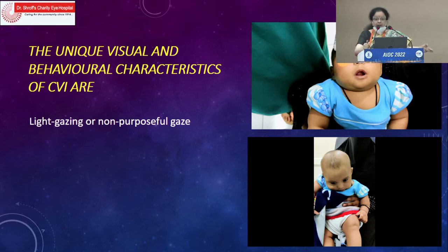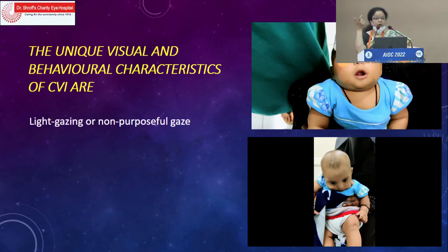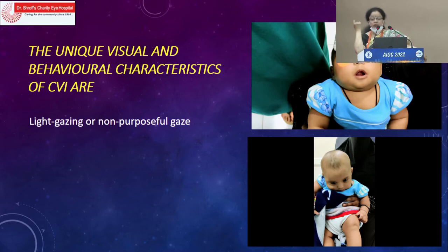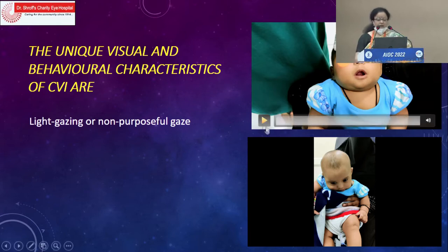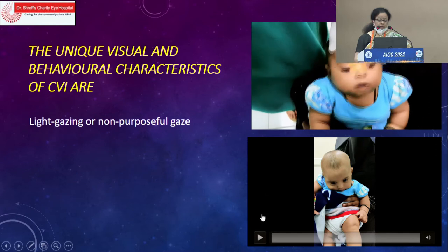At the ROP screening level, if we can also tell parents that at six months or one year they should refer the same child to a CVI clinic or pediatric ophthalmologist, this would be very helpful. Preterm babies may have delayed milestones that are picked up very late by pediatricians, neurosurgeons, or neurologists. We need to diagnose early and start early intervention very soon.